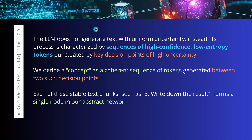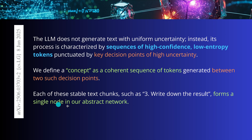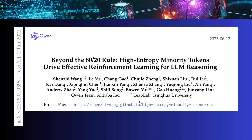An LLM does not generate text with uniform uncertainty. It has a process of next-token prediction where you have a sequence of high-confidence, low-entropy tokens that is punctuated by key decision points of high uncertainty. And this is now the new definition of a concept: a coherent sequence of tokens generated between two such decision points. Each of those stable text chunks forms a single node in our new abstract network.